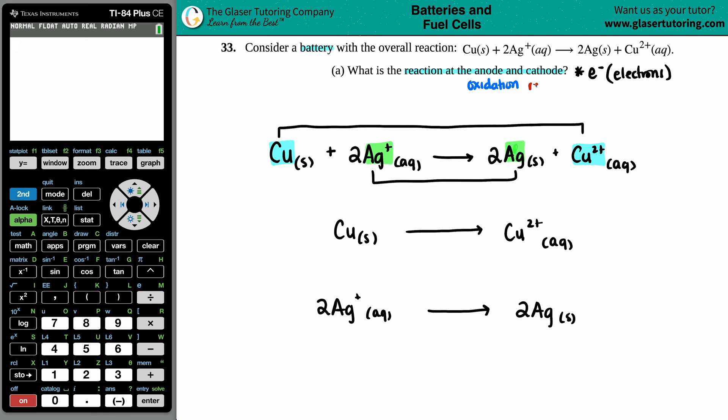And cathode is reduction. You can remember or memorize this by an ox and red cat.